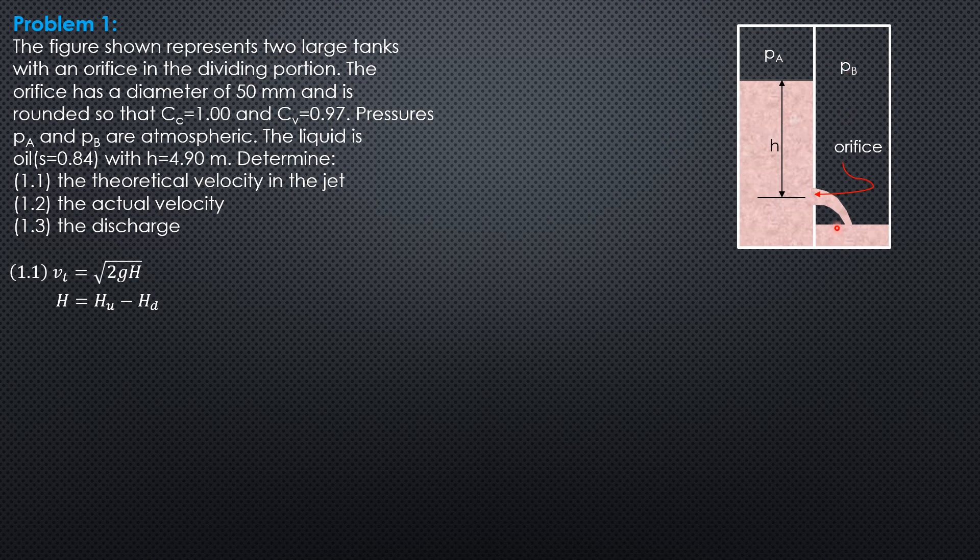Pressure at B is also atmospheric, and there is no depth of flow in the orifice. So therefore, downstream head is just 0, so H is pressure head at A plus small h minus pressure head at B. So PA and PB are both 0, so it is just H, which is equal to 4.9.